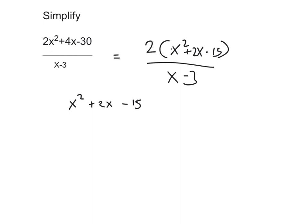I'm going to put an x and an x in the two brackets because x times x gives x². Then I label the middle term 'a' for add and the last term 'm' for multiply. First I ask: what signs multiply to give minus? That has to be plus times minus. Then I ask: what numbers multiply to give 15 and add to give 2? That would be 5 and 3 — so plus 5 and minus 3, because +5 + (-3) = +2 and +5 × (-3) = -15. So those are the right factors.